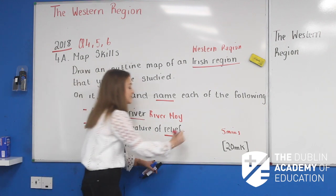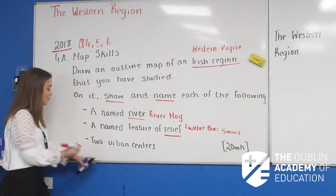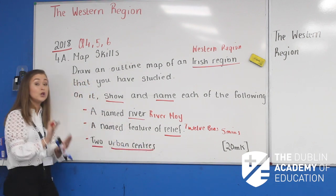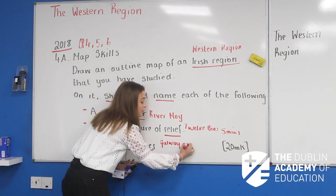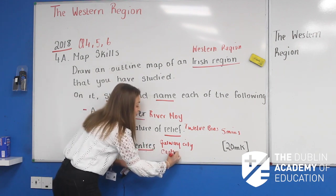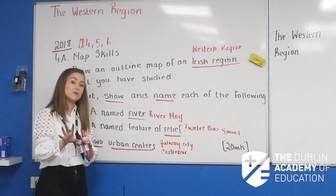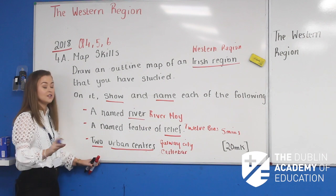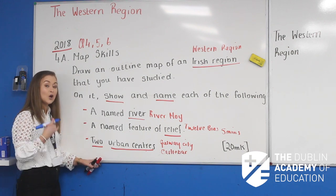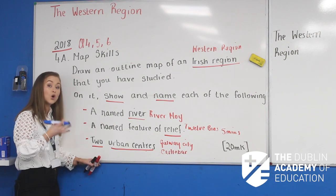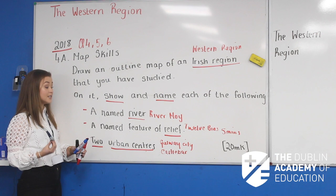Our feature of relief is the Twelve Bens in County Galway. After that we're asked for two urban centres — first Galway City, and our second one is Castlebar in County Mayo. Now there is one other thing that may be asked, and you'll see it in the sample question: a named communication link, or a named road or railway link. That is a possibility. They may say the word 'road/rail' and will generally give you an option in relation to that.